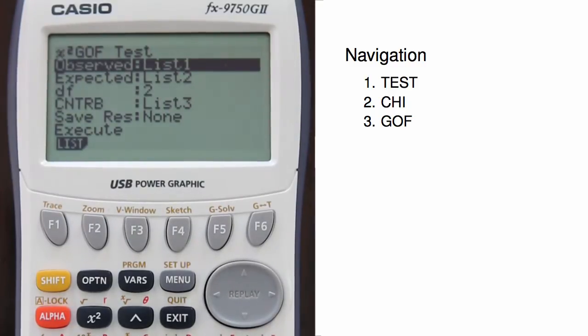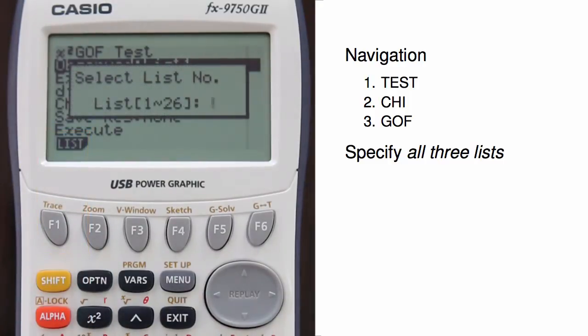We specify which list is our observed data by hitting F1 for list, and then entering the list number, which was 3.